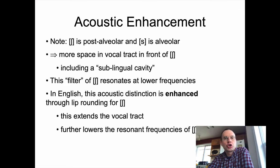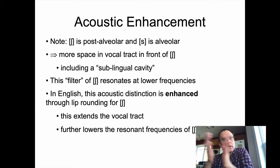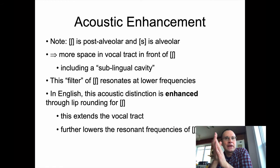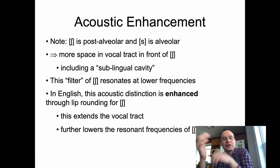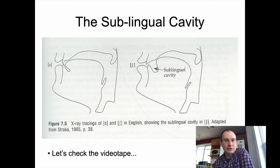That's going to extend the little vocal tract filter a little bit for Esch and also lower the resonant frequencies of Esch a little bit and make them more distinct. This is kind of like another example of adaptive dispersion theory in play — trying to make these two fricatives sound more distinct from each other and easier to perceive the distinction between them.